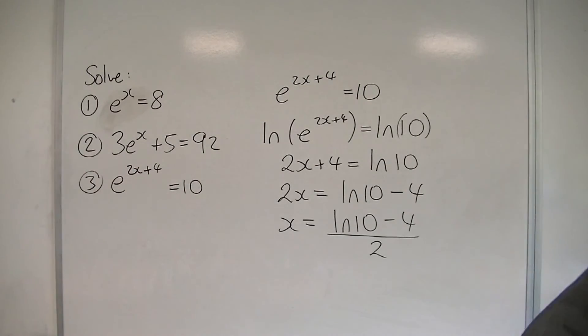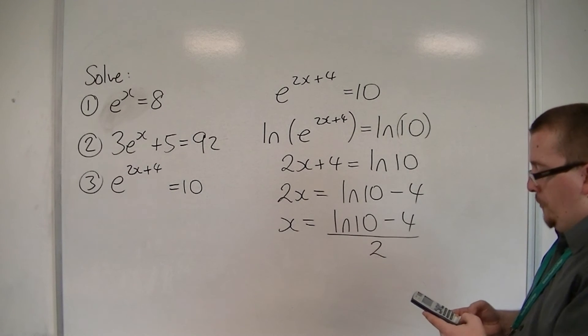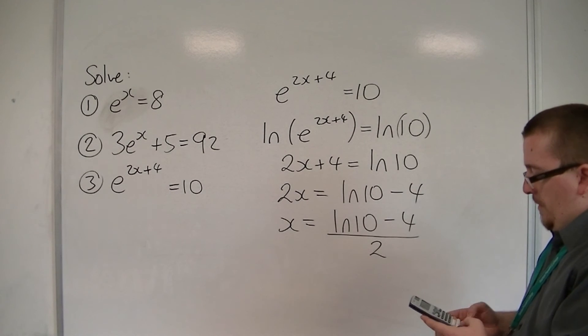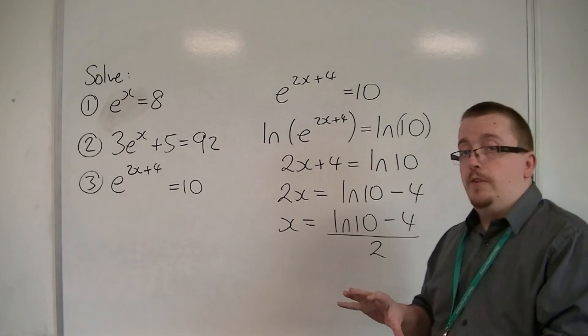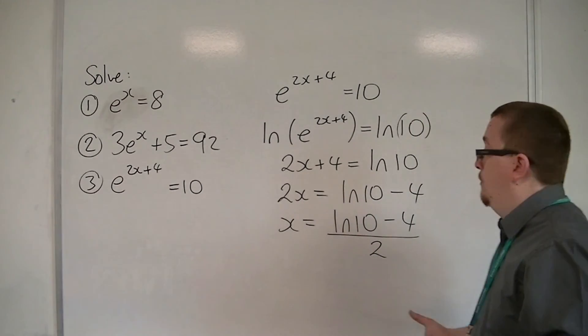If you want the decimal approximation as before, then we have ln of 10, take away 4, and then divide by 2. And we get minus 0.849 to 3 decimal places.